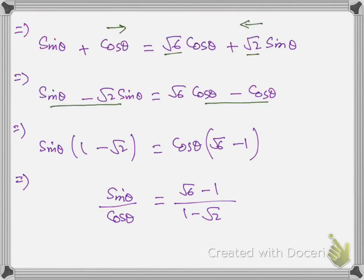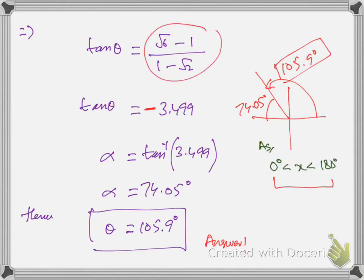Bring sine θ to the left side and cos θ to the right side, take common, and simplify. We have sine θ upon cos θ which is tan θ. Check the numerical value — since this value is negative, tan must be in the second and fourth quadrant. But we cannot work in the fourth quadrant because the given domain is 0° to 180°, so we can only work in the second quadrant. The answer should be to one decimal place according to the Cambridge (CIE) restrictions.